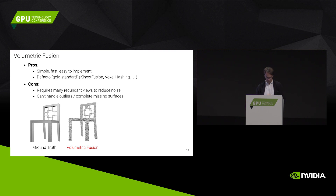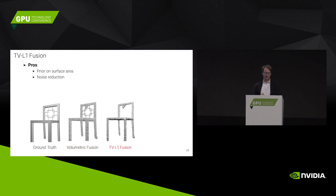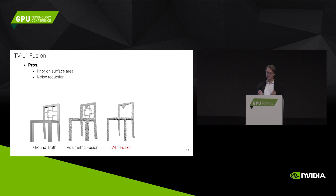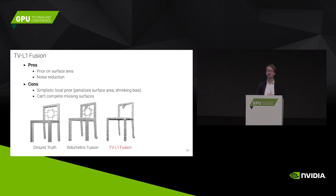You can see an example where the left is the ground truth reconstruction and the right is the Curless and Levoy reconstruction based on four noisy input images — it maintains details but has a lot of noise. A second baseline is the TV-L1 fusion approach — total variation with L1 norm regularization. This is an approach with a simple prior that tells you the surface area should be small. It leads to significant noise reduction, but it also over-smoothes edges and removes thin details. The simplistic local prior cannot capture the complexity of the world, and it cannot reason about missing surfaces.